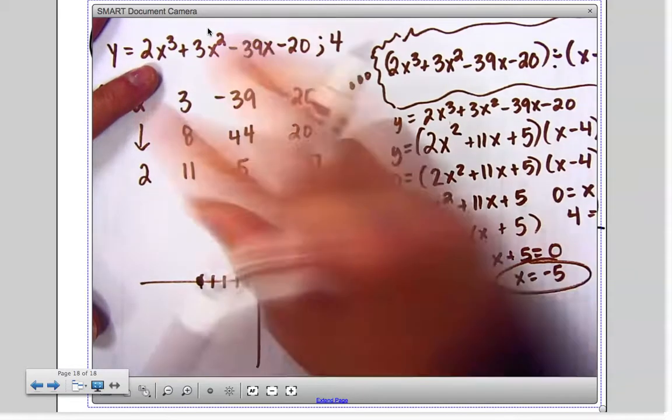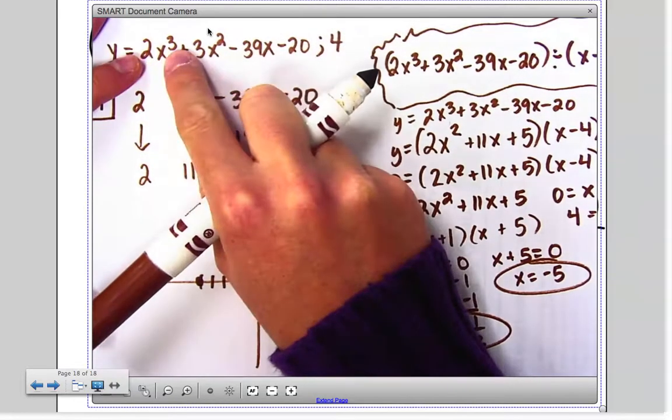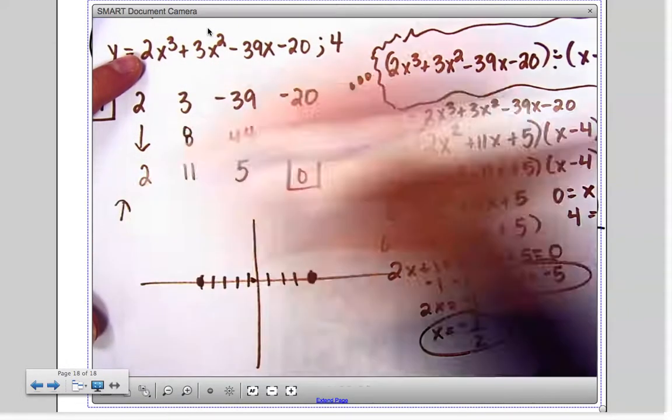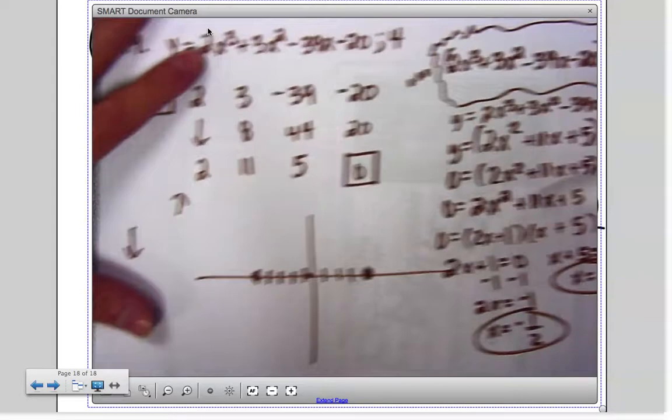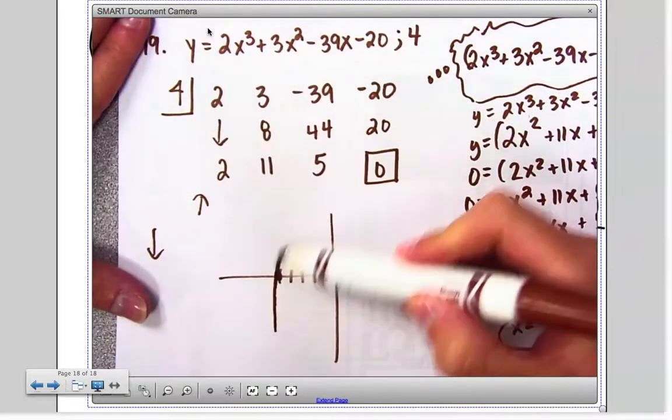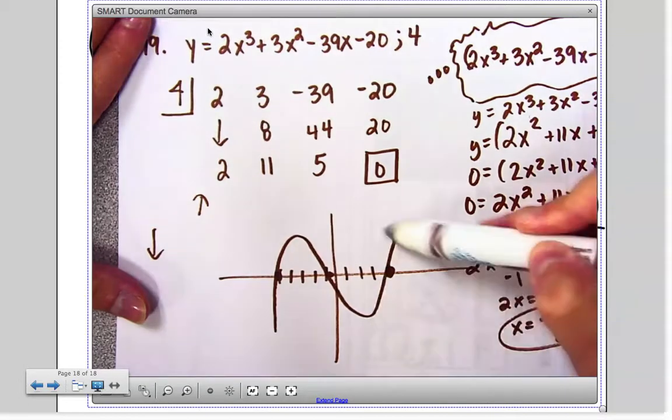Just drawing a sketch here to show you the visual representation of this. This is a positive leading coefficient with an odd degree, so my end behaviors go like this. So I have to touch all of this.